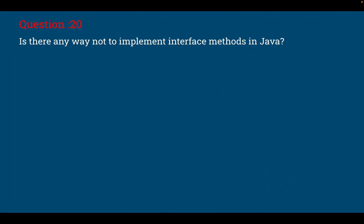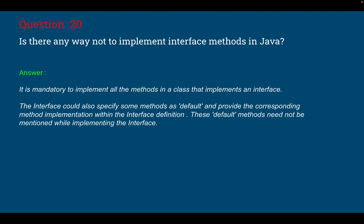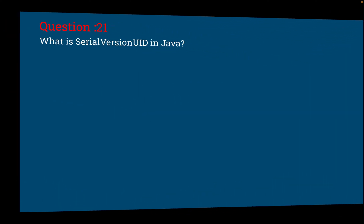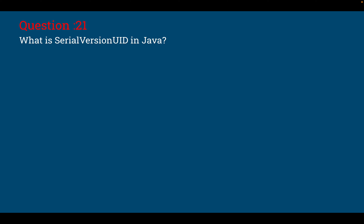Question number 20: is there any way to not implement interface methods in Java? It is mandatory to implement all methods in a class that implements an interface. However, an interface can specify some methods as default and provide the corresponding method implementation within the interface definition. These default methods do not need to be implemented when the interface is used. This feature is available from Java 8 onwards.